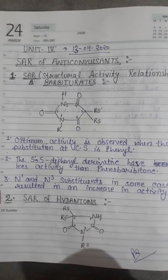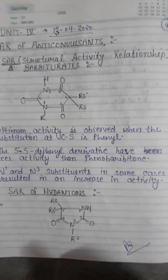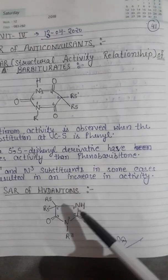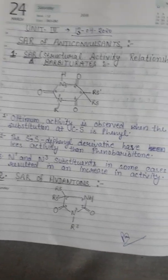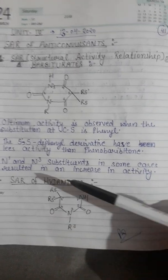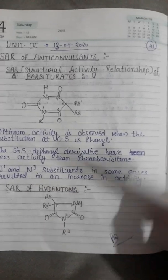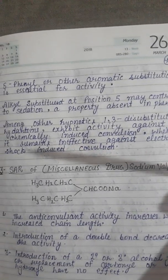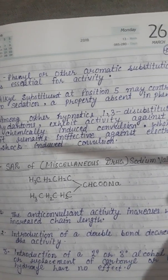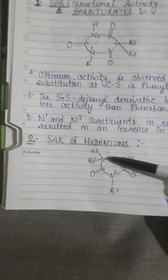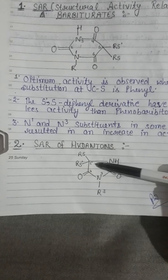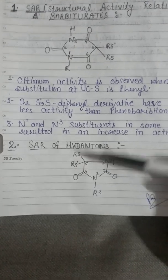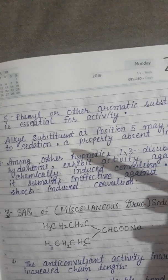The next category is hydantoin. The substitution at carbon-5 — specifically 5-phenyl or other aromatic substitution — is essential for the activity. That means substitution at the fifth position of the compound is essential for the drug's activity.